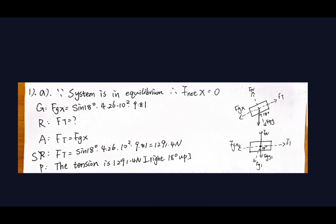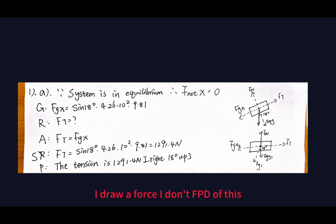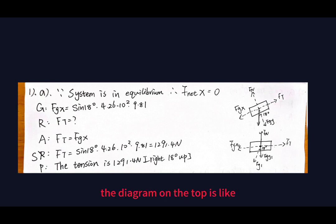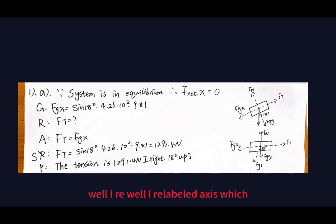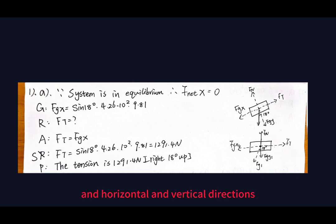the net force in the x-direction equals zero. I drew a free body diagram of this because it's inclined on a slope. The diagram on top shows the true nature of the setup, while the diagram on the bottom uses relabeled horizontal and vertical axes, which is easier to work with.